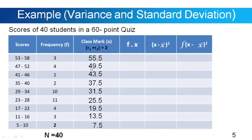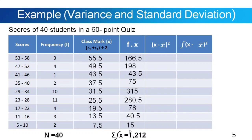Now we have our class marks. The fourth column is the product of frequency and class mark, F times X. Multiplying the first row: 3 times 55.5 equals 166.5. Second row: 4 times 49.5 equals 198. We do that for all rows, then get the summation of F times X, which equals 1,212.